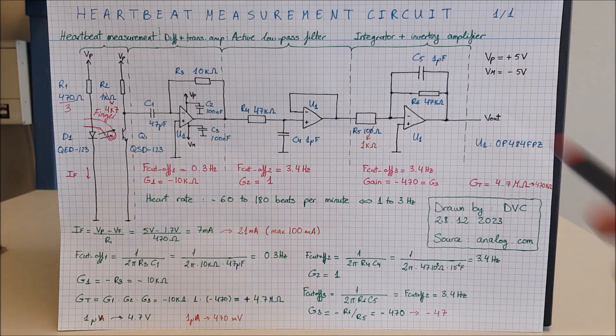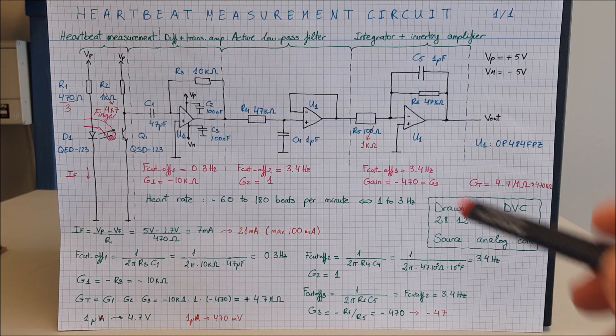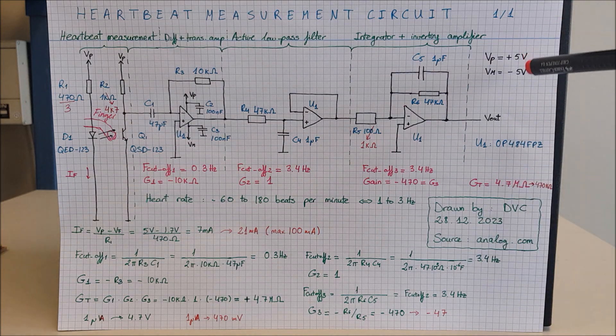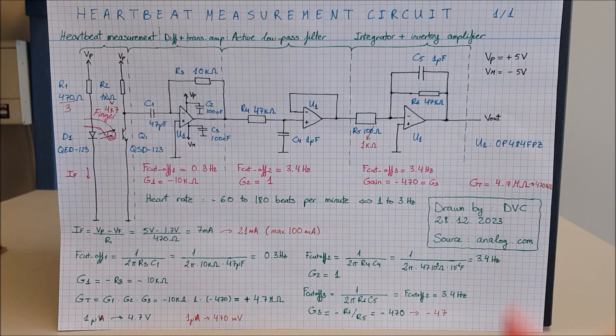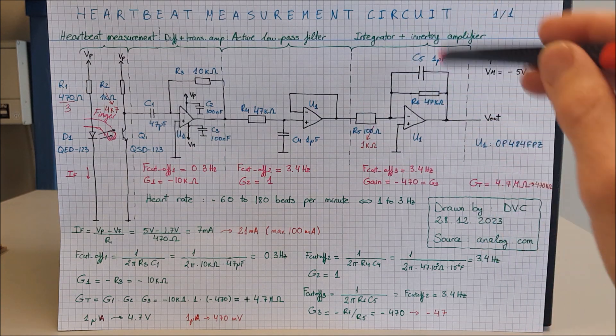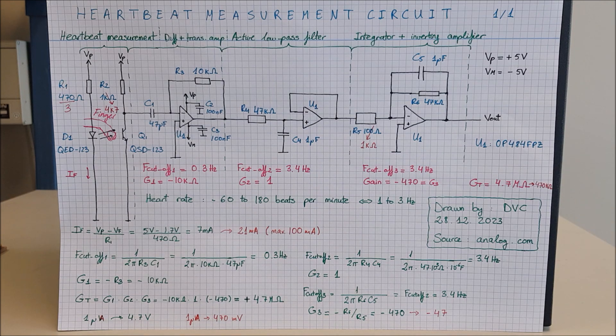Finally, I have lowered the gain because it was saturating, the signals were clipping. The signals cannot swing beyond the voltage rails, so R5, I made it 1 kilo ohm, so I decreased the gain by 10 of the last stage. As a result, the total gain is 470 kilo ohms, meaning that a 1 microampere current will produce 470 millivolt signal. Now let's go take a look at the implementation.